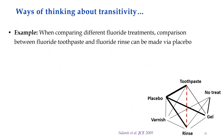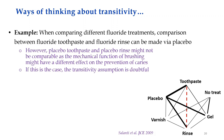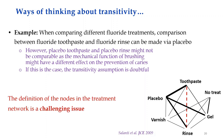For instance, in a network comparing different fluoride treatments, the comparison between fluoride toothpaste and fluoride rinse can be made via placebo, but the placebo of toothpaste and the placebo of rinse are not the same. They might not be comparable because the mechanical function might have an effect on the prevention of caries. In this case, the transitivity assumption is doubtful. This illustrates that defining the nodes in the treatment network is a quite challenging issue.